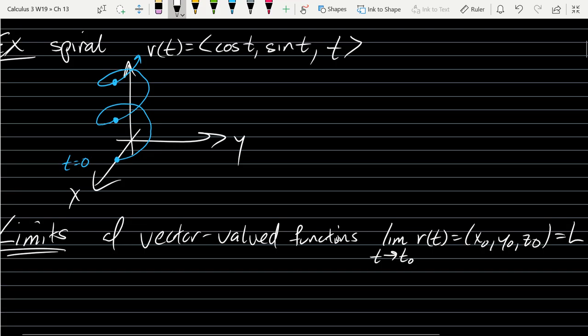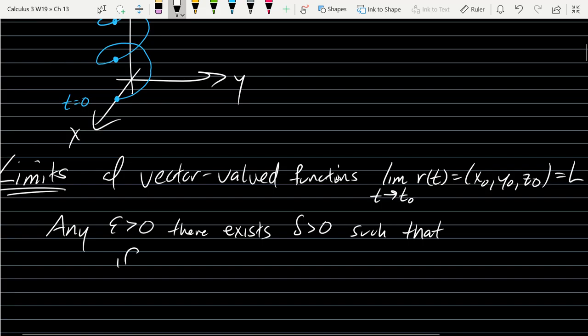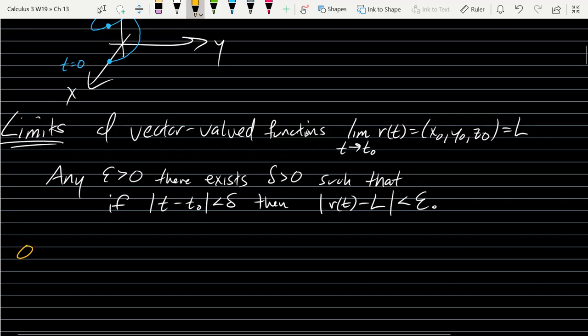And we're going to call this l. So l is now a three-dimensional point. There's three components of l. We're going to write the epsilon delta. Any epsilon greater than zero, there exists a delta greater than zero, such that if the input t minus t-naught is less than delta, then r of t minus l is less than epsilon.